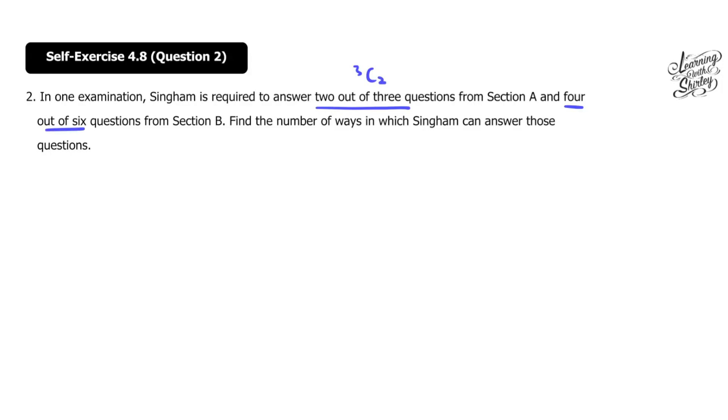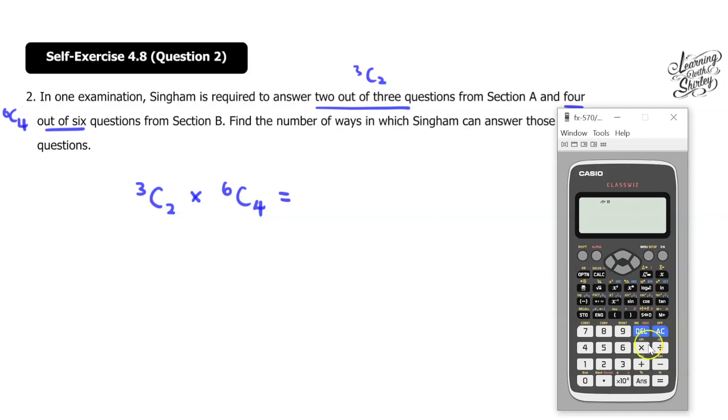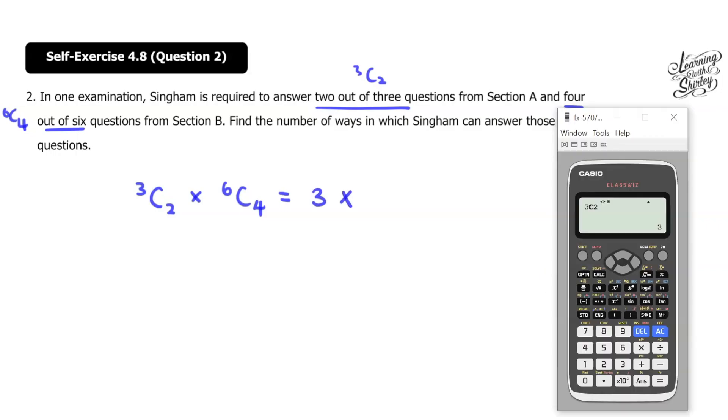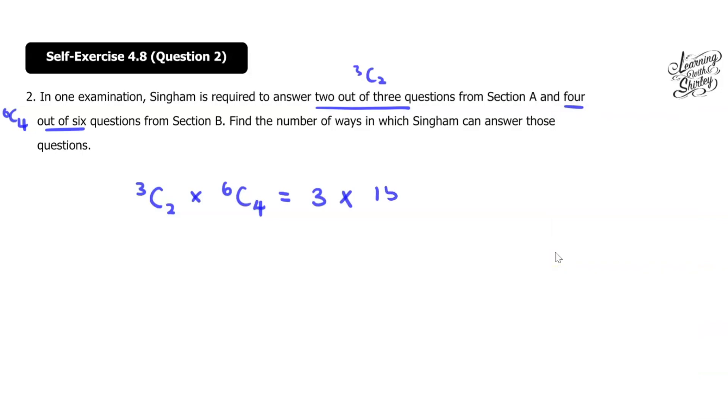And 4 out of 6 means it's 6C4. So to find a number of ways, the answer would be 3C2 times 6C4. So then we use the calculator. Let's calculate what is 3C2. So 3, and then C2 is 3. And then times with 6C4. So 6, and then C4. So equals 15. So 3 times 15 will be equal to 45 ways. And this is the answer.